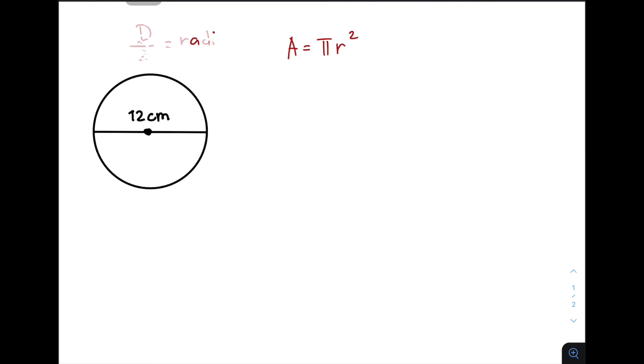Let me write this again. Your diameter divided by 2 is equal to the radius. So, if your diameter is 12, and to get the value of your radius, all you need to do is divide this by 2, and this gives you r is equal to 6 centimeters.